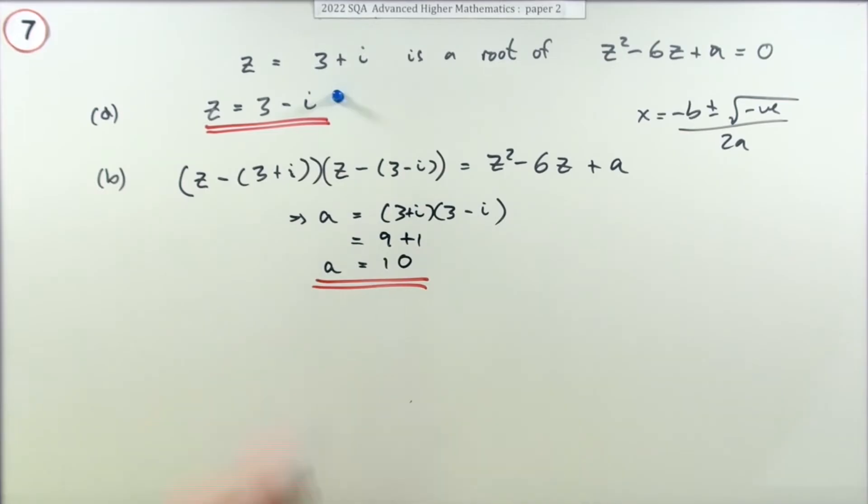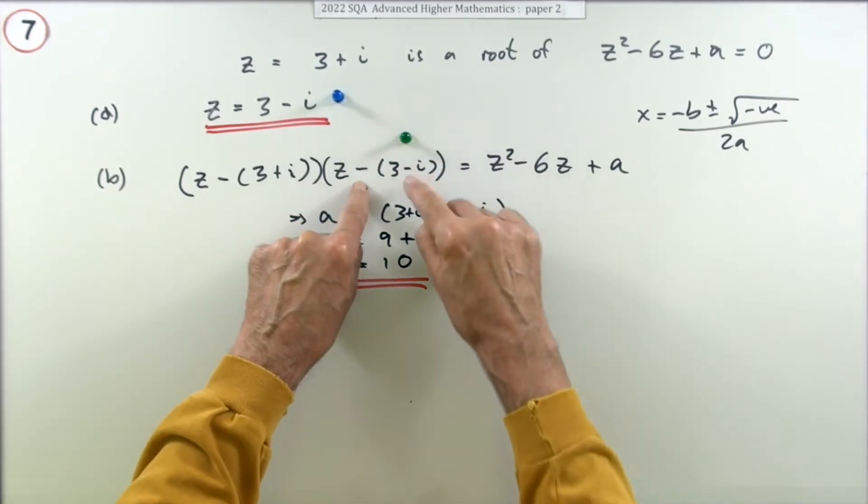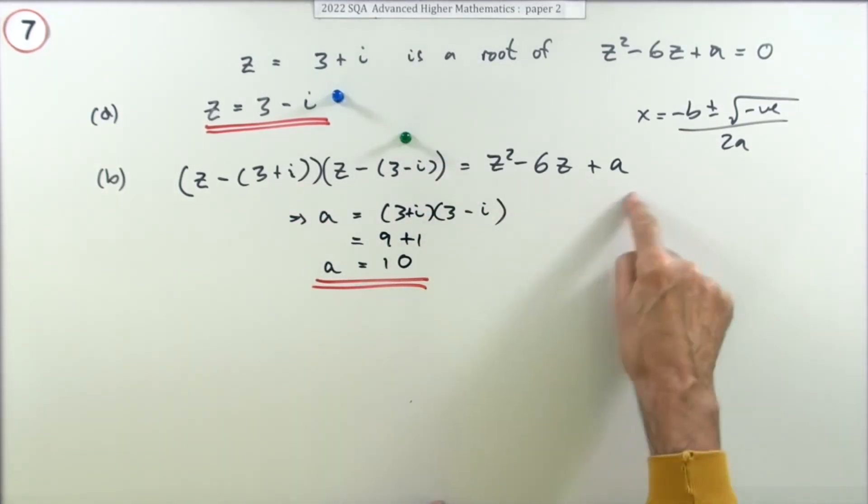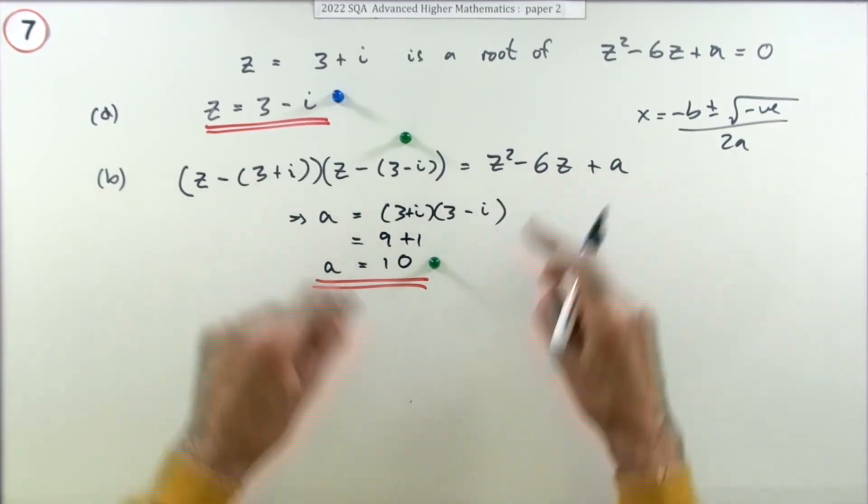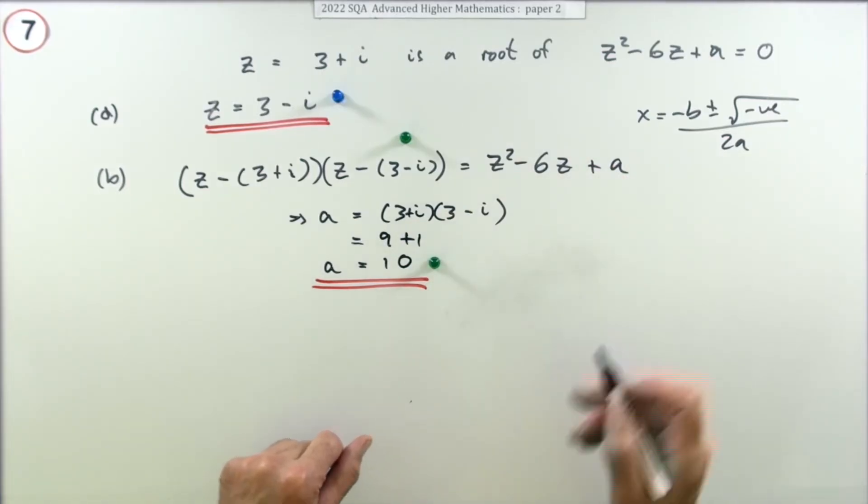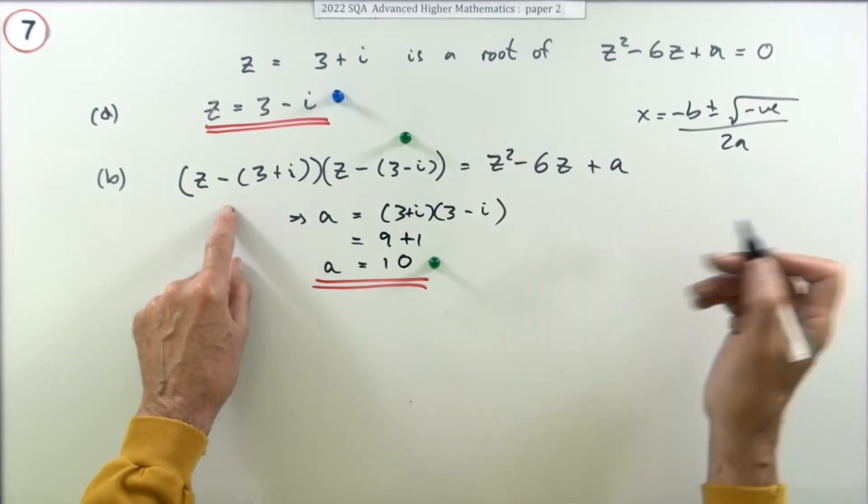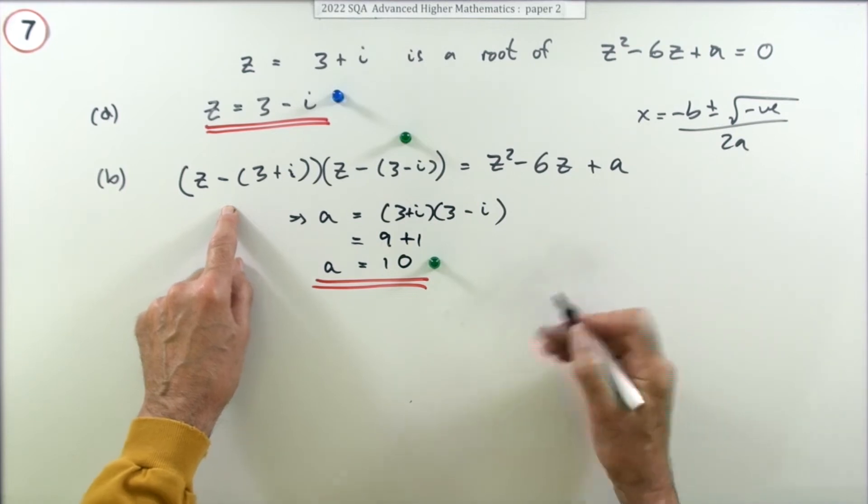And the marks were: forming that product to reconstruct the original quadratic was one mark, finding a by equating the terms is the second mark. Now that would be the obvious way to do it, just by equating those particular constants. However, you might have tried division which would be longer, it's a bit more awkward, especially with all the negatives going on.